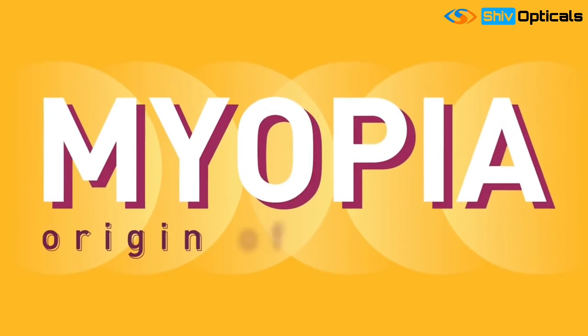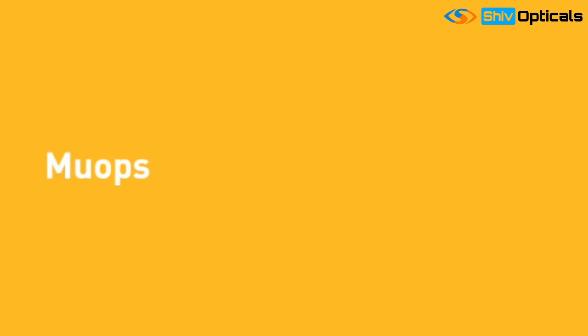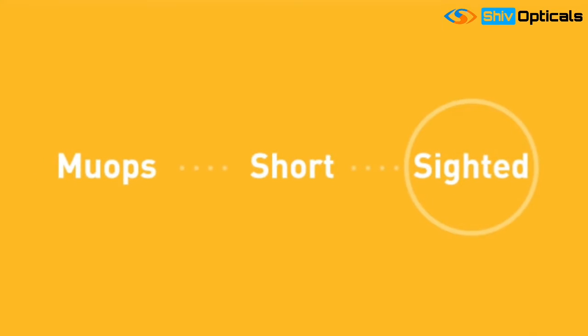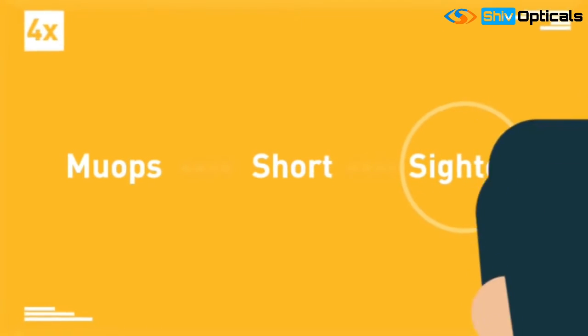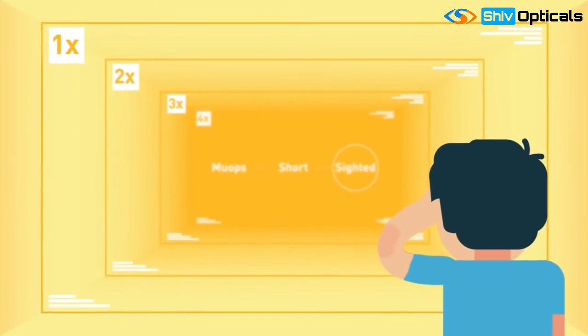Myopia. Origin of the word: it comes from the Greek word myops, meaning short-sighted. These people cannot see distant objects clearly.